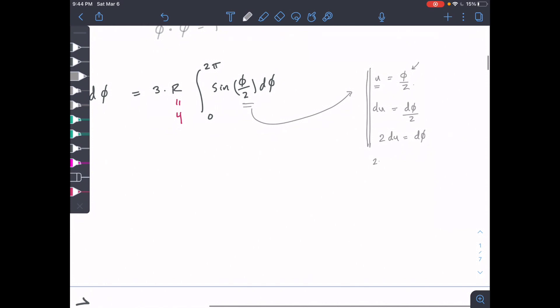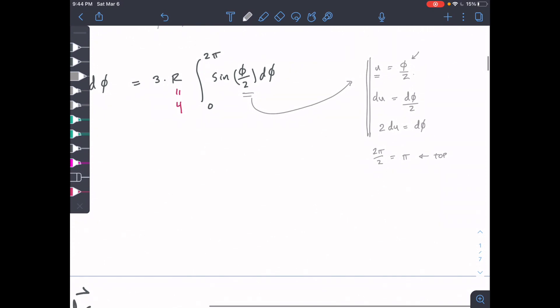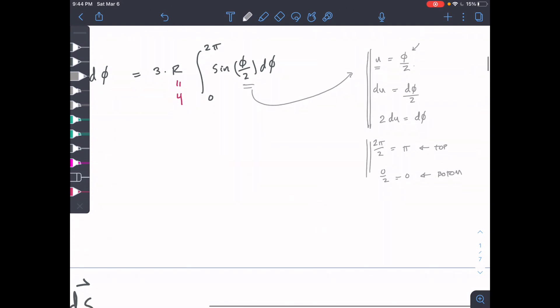Our bounds are going to change: 2 pi over 2 equals pi for top, and 0 over 2 equals 0 for bottom. This is just because we did that u sub - we need to apply the manipulation to our bounds as well.